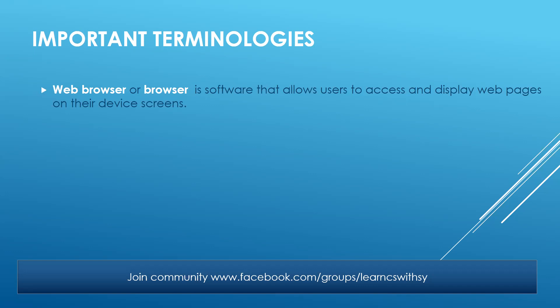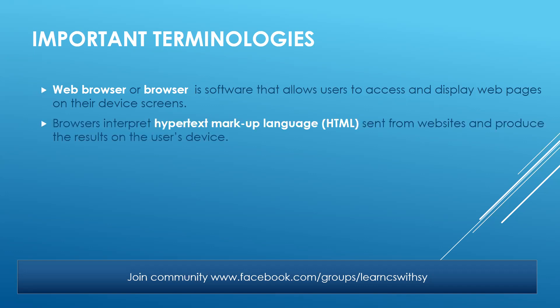These are all examples of web browsers because they are used to open, access, and display web pages. Browsers are able to interpret HyperText Markup Language, or HTML, which is sent from websites, and produce the results on the user's screen.